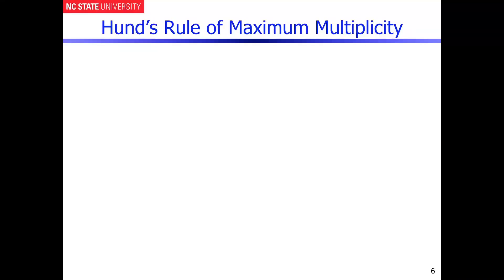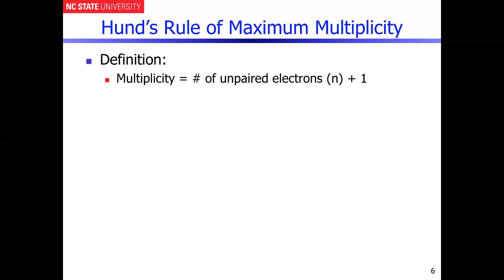Before we can continue the discussion of crystal field theory and ligand field theory, we need to look back and discuss Hund's rule of maximum multiplicity. In general, the spin multiplicity is simply going to be the number of unpaired electrons in a given molecule, which is defined as n plus 1.